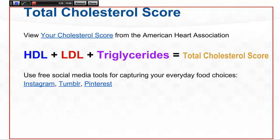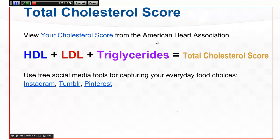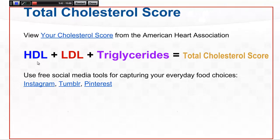After you have viewed the learning object from the American Heart Association, where I earlier on had shown you a sample output, you would summarize from that learning object that the total cholesterol score comprises HDL — high-density lipoprotein — LDL — low-density lipoprotein — and triglycerides.